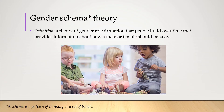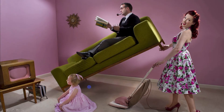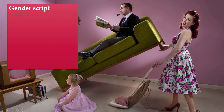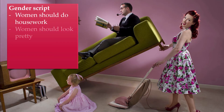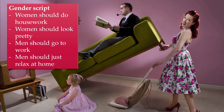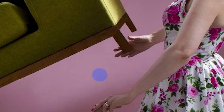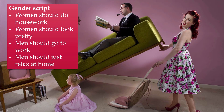These scripts help children decide how they should behave and predict how someone else will behave. For example, if a child grows up in a certain environment — watching a kind of fake TV — the gender script she might start to develop is that women should do the housework, women should look pretty, men should go to work, and men should just relax at home. And obviously women should also be insanely strong, because it looks like she's supporting the couch with like two fingers — she is built.